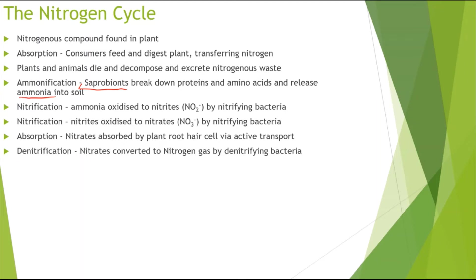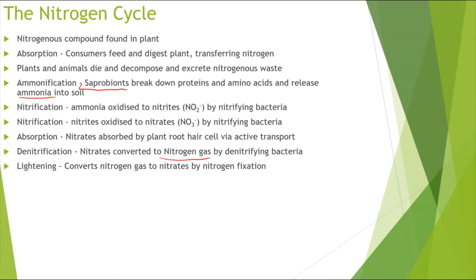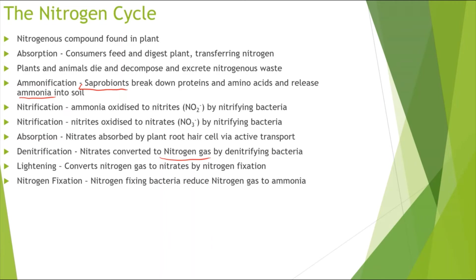And then denitrification could occur. When we have those nitrates, denitrifying bacteria could convert them to nitrogen gas — N2, which is atmospheric nitrogen — losing oxygen in the process. The opposite could also happen: when lightning strikes, we can convert nitrogen gas from the atmosphere to nitrates by nitrogen fixation. We could also directly form ammonia — ammonium compounds — from atmospheric nitrogen by nitrogen fixation, done by nitrogen fixing bacteria. This is a reduction as we are adding hydrogen to it.